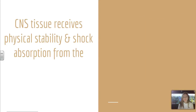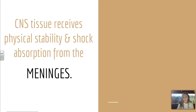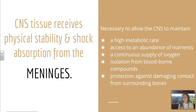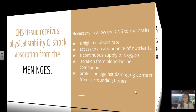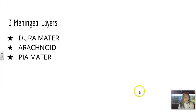The central nervous tissue receives physical stability and shock absorption from the meninges, and this is necessary to allow the central nervous system to maintain many things: a high metabolic rate, access to an abundance of nutrients, a continuous supply of oxygen, isolation from blood-borne compounds, and protection against damaging contact from surrounding bones. So it's very important for the functioning of the brain and the spinal cord.